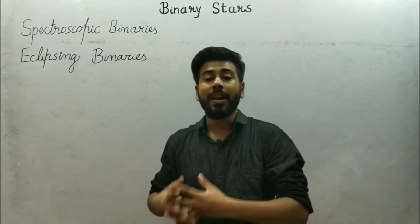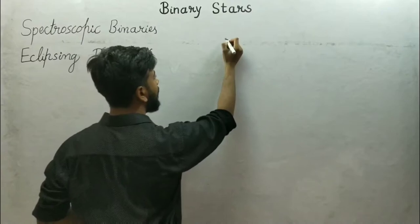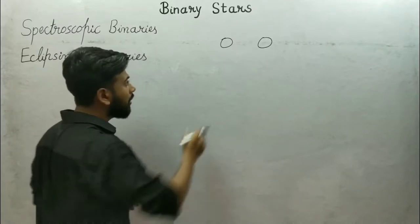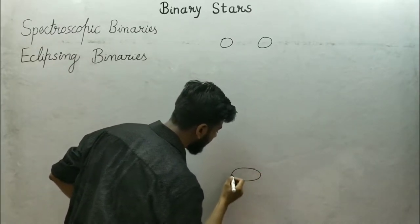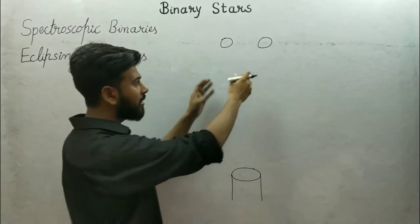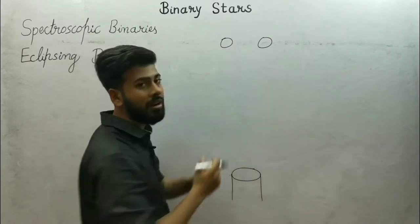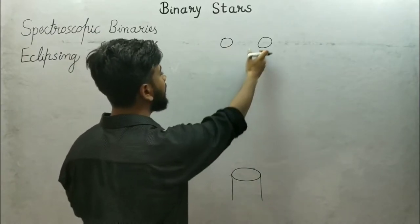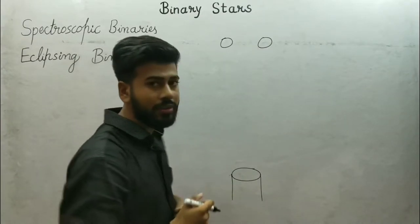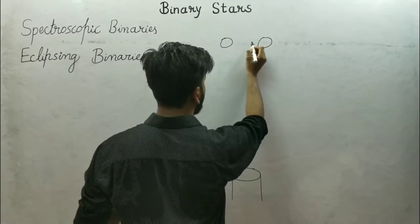Let's start with spectroscopic binaries. Spectroscopic binary stars are those stars which are observed by using spectroscopy. Suppose here is a binary star system — we observe them from here, this is our location. These stars are so close together, or so distant, that we cannot see the individual stars with our telescope. So how do we know that there are two separate stars? We use spectroscopy.